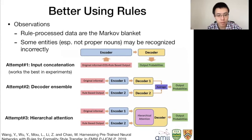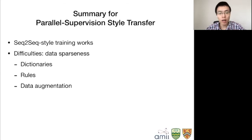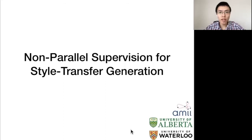To summarize parallel supervised text style transfer: a machine translation-inspired model works — either phrase-based or neural. The main difficulty is data sparsity, since we don't have as many samples as a real machine translation task. Previous work has focused on incorporating prior knowledge like external dictionaries, rules, or data augmentation to regularize the model. Non-parallel supervised learning for style transfer is probably the most interesting and most extensively studied setting in this tutorial.